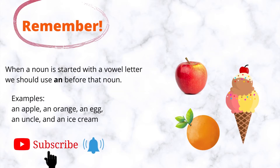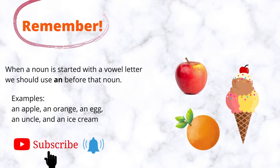Remember, when a noun is started with a vowel letter, we should use an before that noun. Examples: an apple, an orange, an egg, an uncle, and an ice cream.